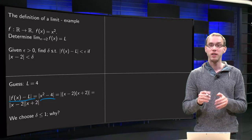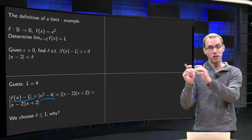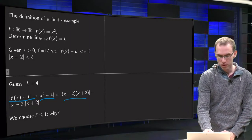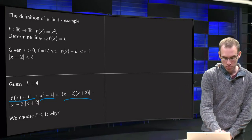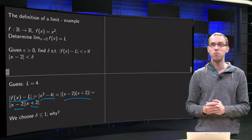...and we can split it: x squared minus 4 equals (x minus 2) times (x plus 2), like this. And the absolute value of a product is the product of the absolute values, so |x minus 2| times |x plus 2|.